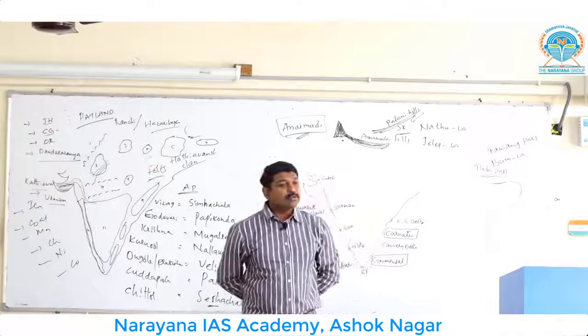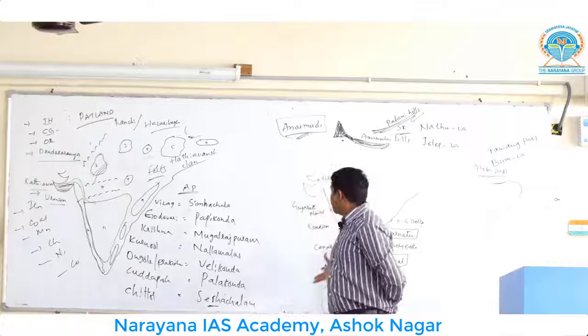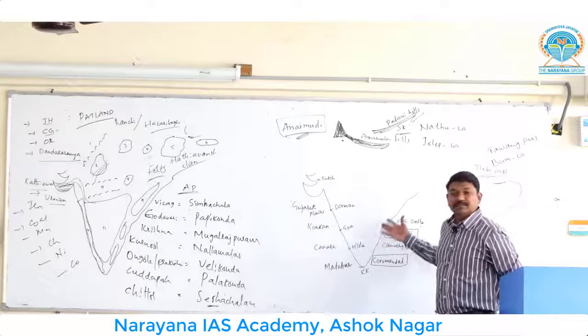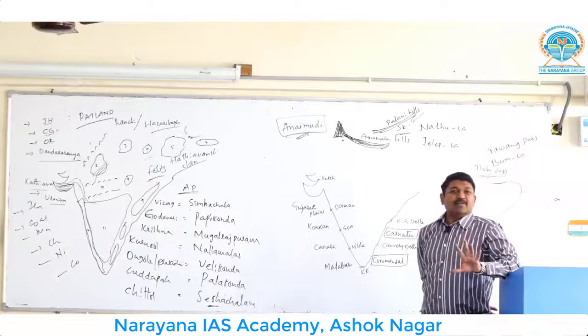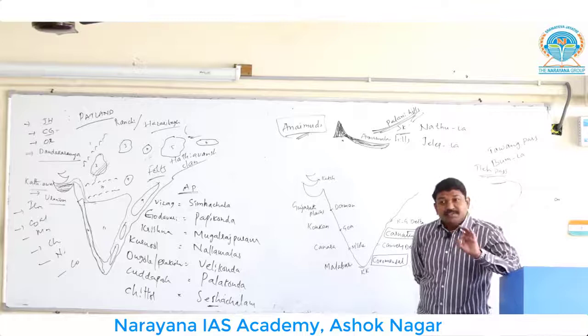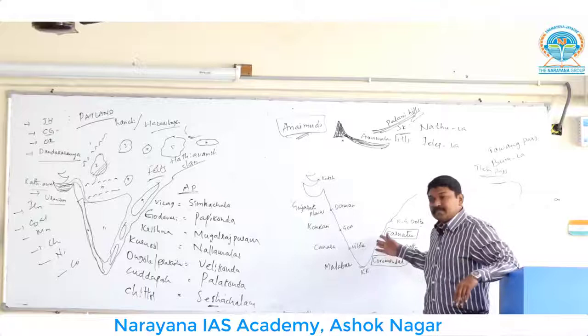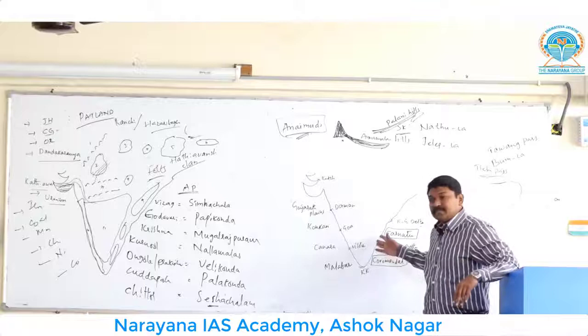The two very important classical dances that developed in this coast are Kuchipudi from Andhra Pradesh and Bharatanatyam from Tamil Nadu. Great literary personalities like Annamayya, Chagriya, and Yogi Vemana also came from this coast — all from the region between the Krishna and Kaveri deltas.